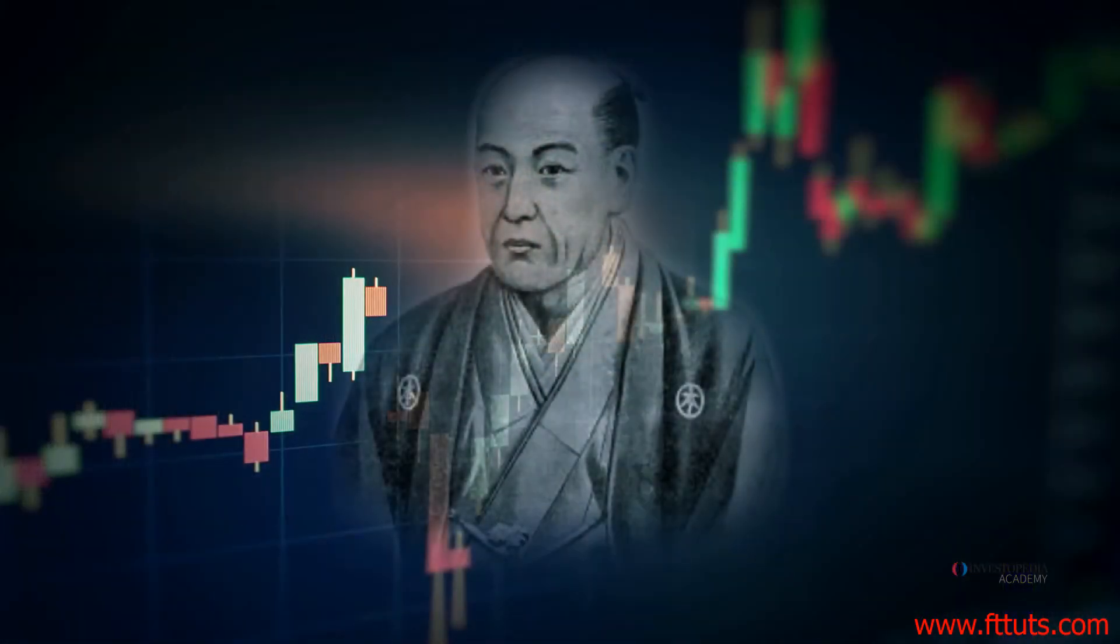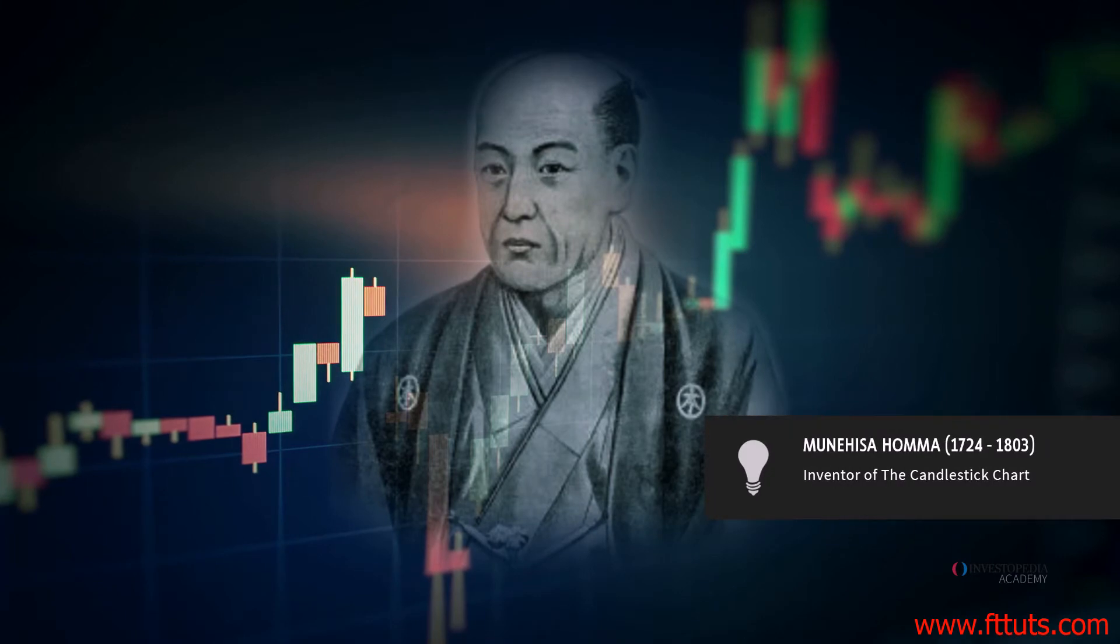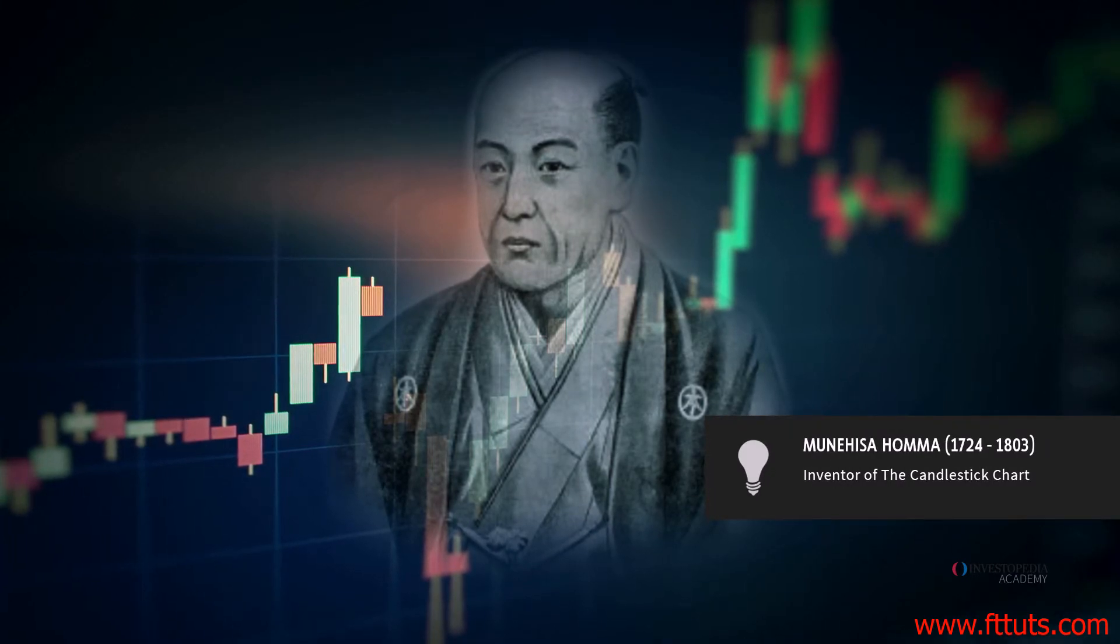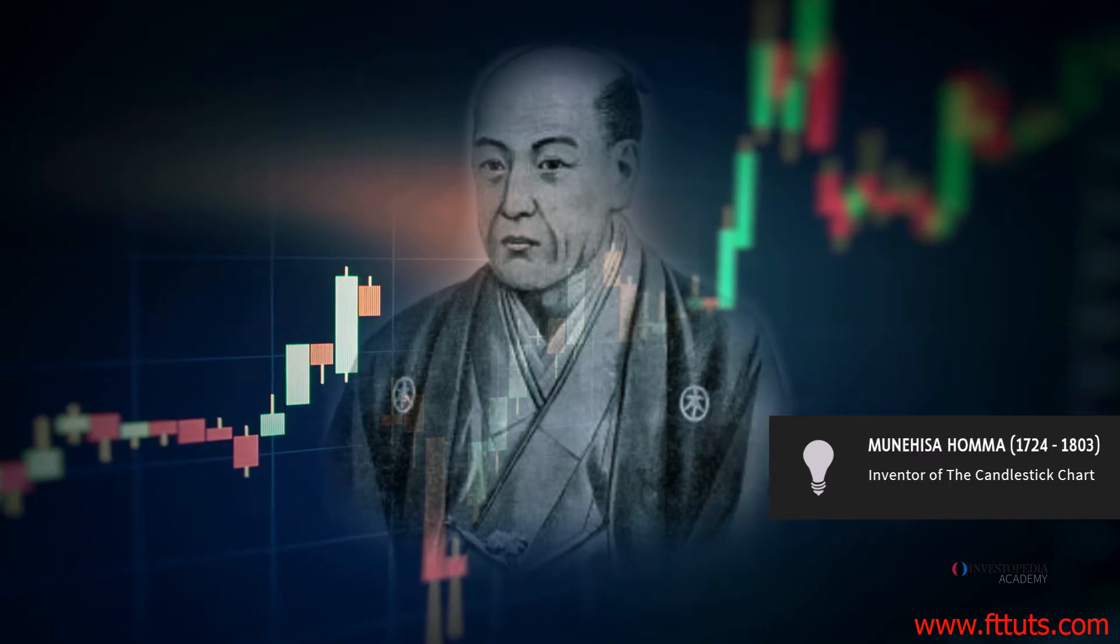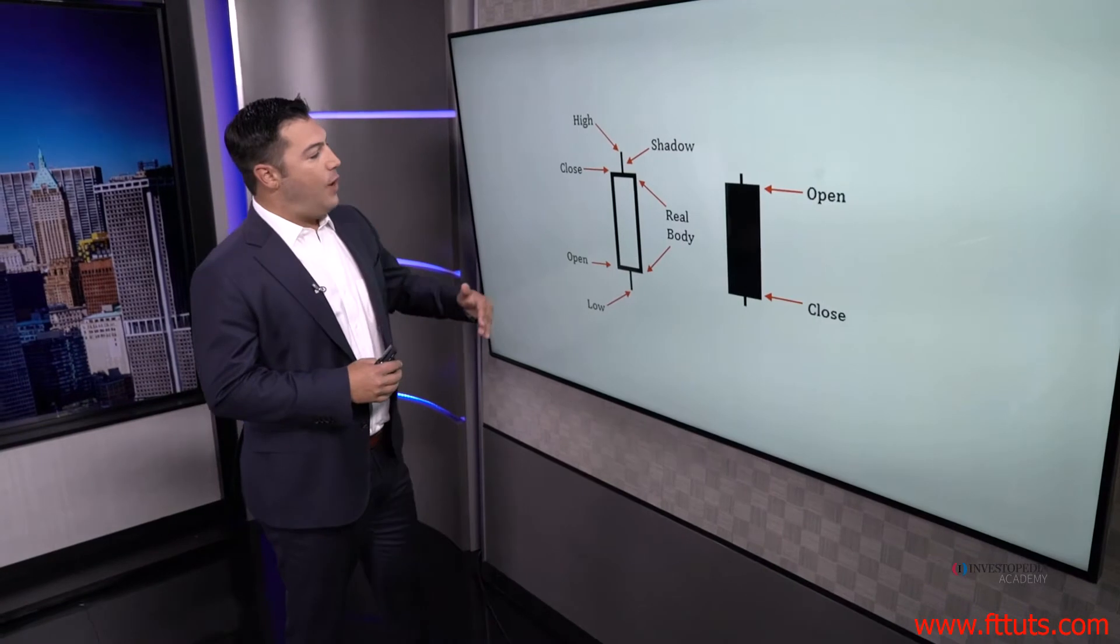The next type of chart is the Japanese candlestick, which was really first used by a gentleman by the name of Monohisa Homa. He was a Japanese rice futures trader back in the 1700s. We're going to talk about how these candlesticks are constructed. They're very similar to the bar chart in that you have a high, a low, an open, and a close.